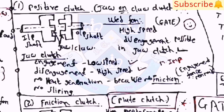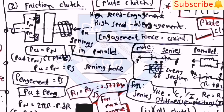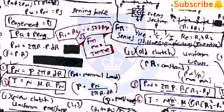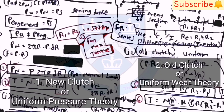For jaw clutch, engagement force is normal to the jaw. For friction clutch (plate clutch): P_a = P_n for engagement, so P_engagement = P_s, but P_a ≠ P_engagement. Engagement force is axial to the clutch. dP_n = p·2π·r·dr, and T = n·mu·r·dP_n. For maximum torque: r1 = r2/∛3. Two main cases: new clutch uses uniform pressure theory, and old clutch uses uniform wear theory.